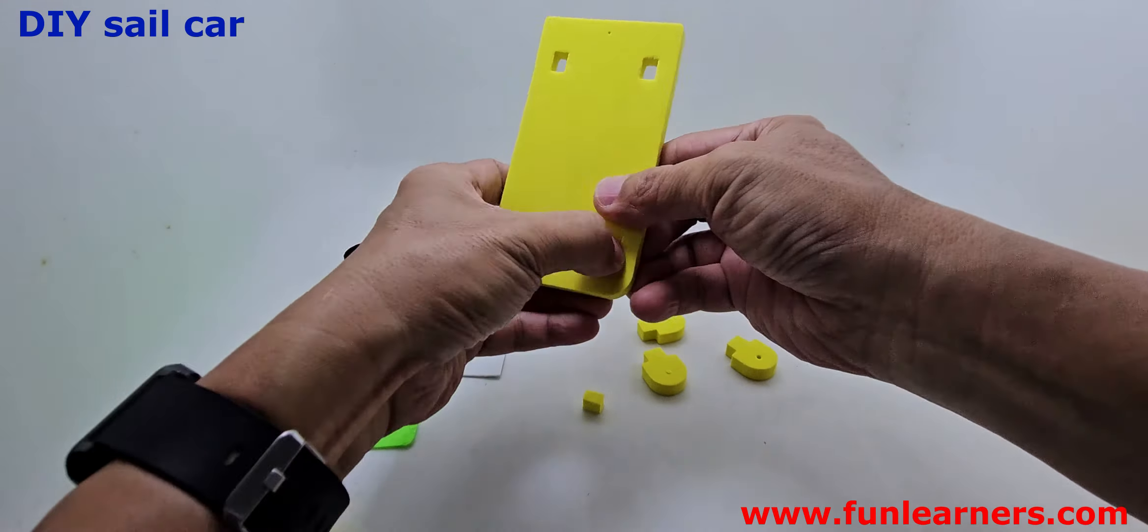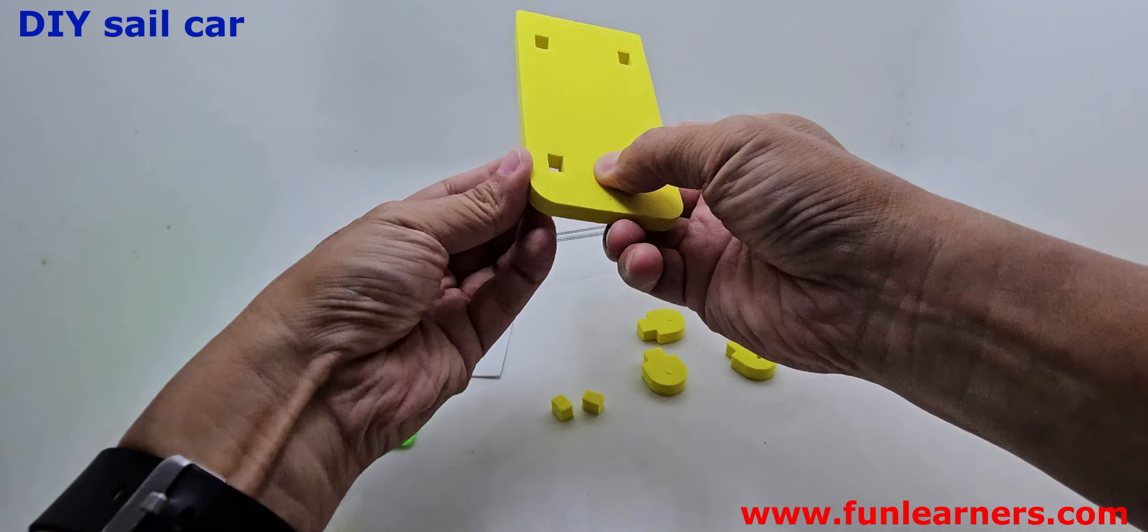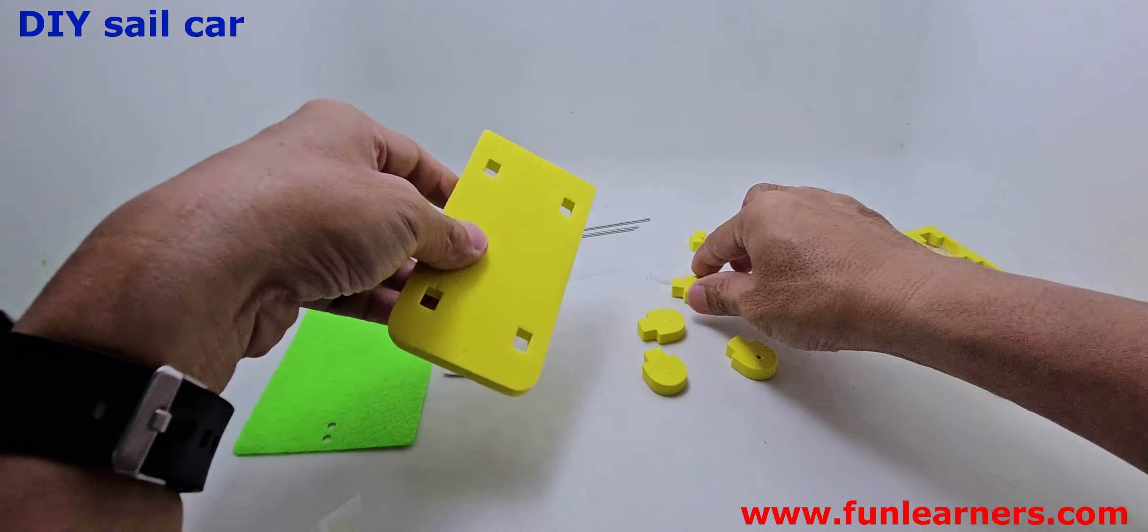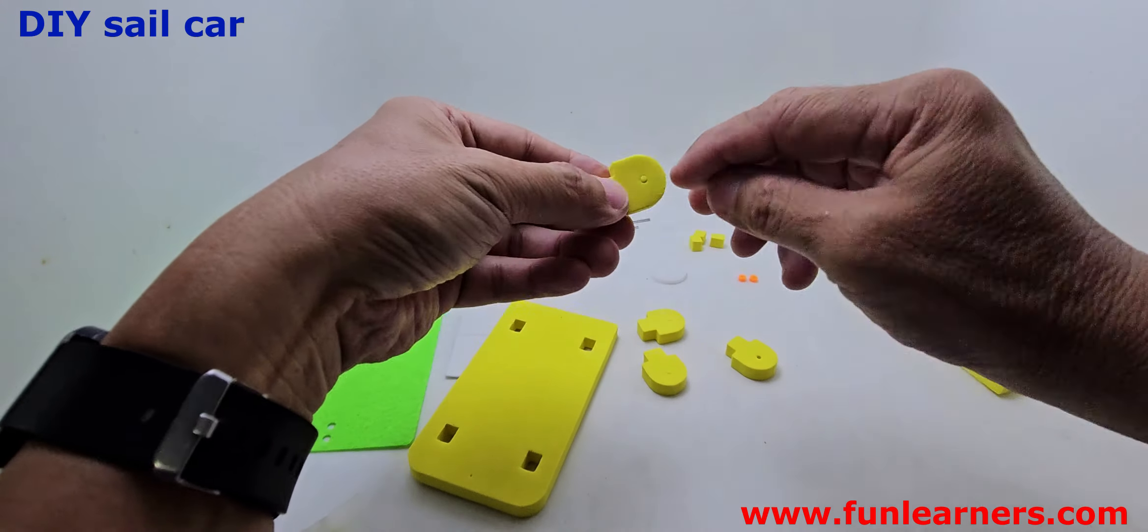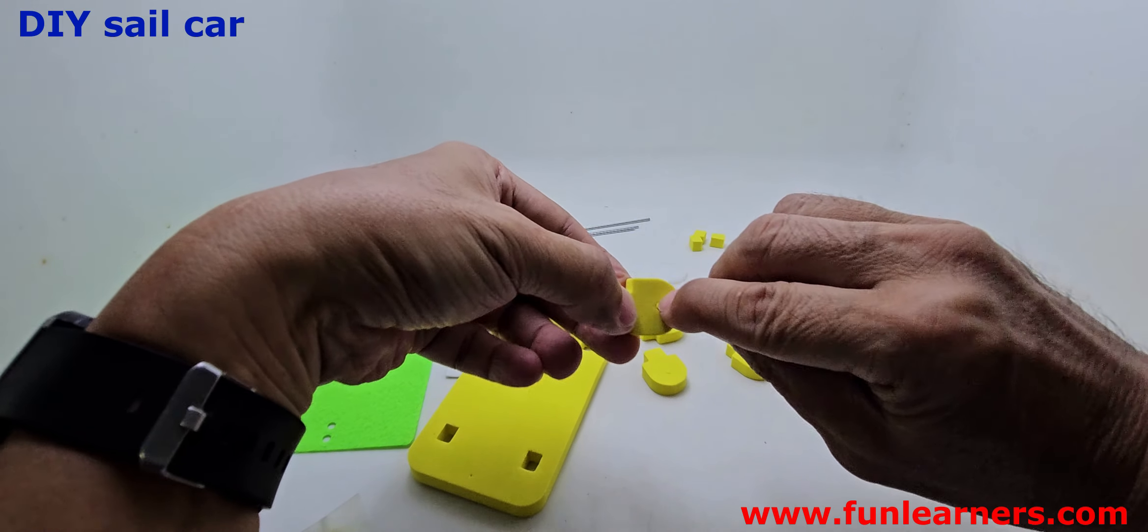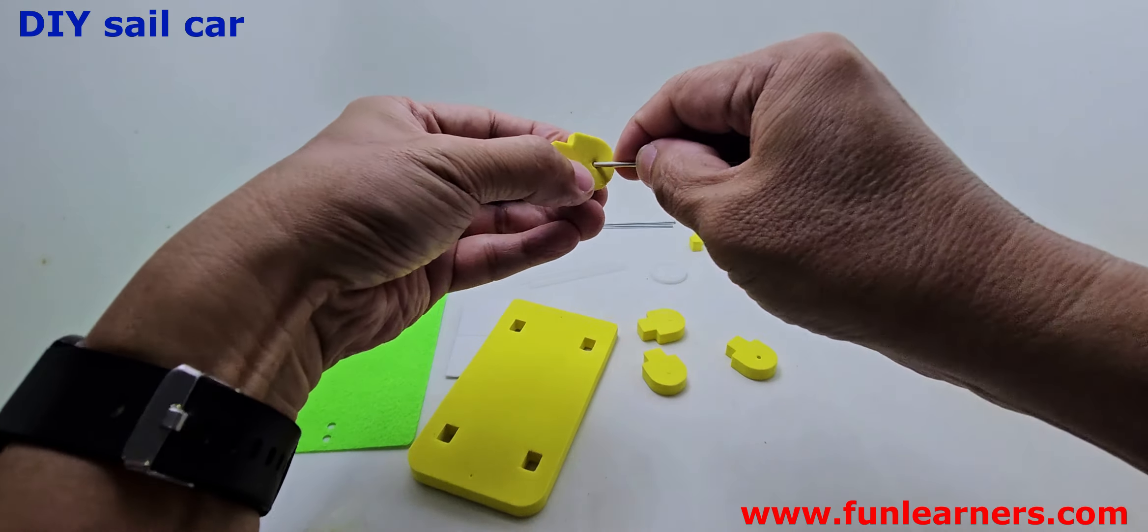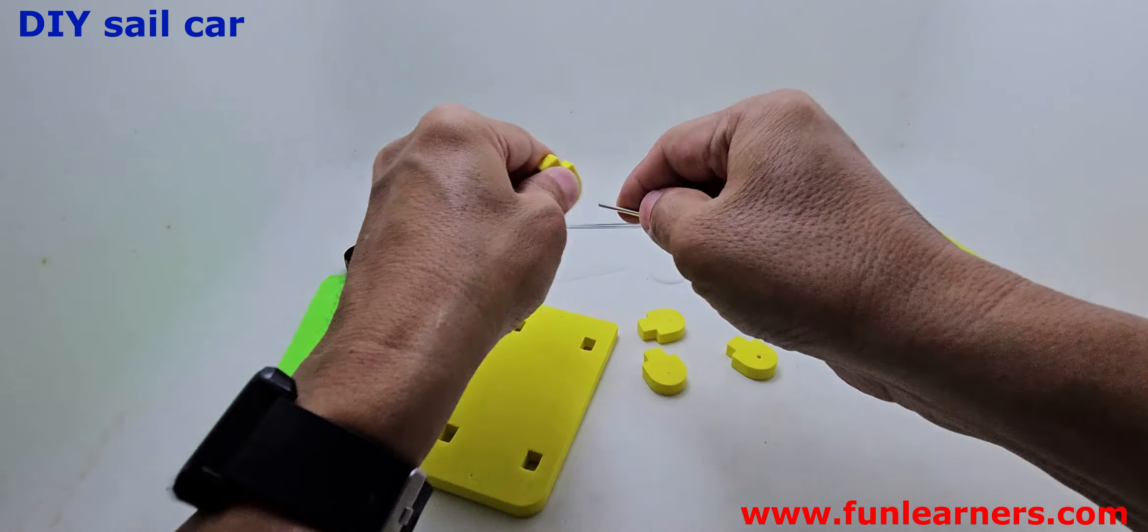Okay, you can throw away this rectangular piece, not important. Then here we're supposed to remove this. To make it simple, we can use this to push them out: one, two, three, and four.